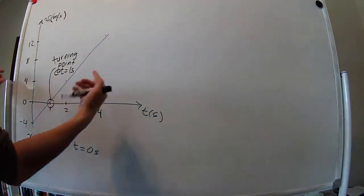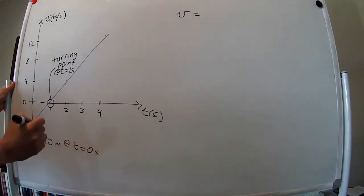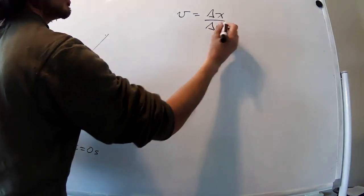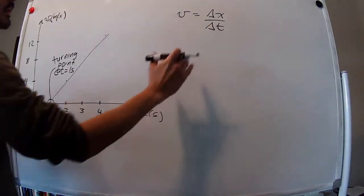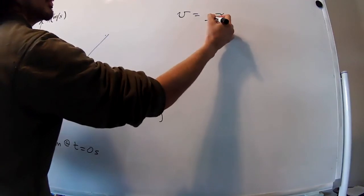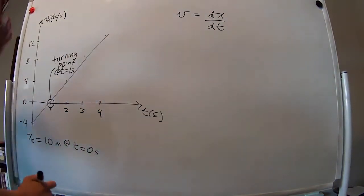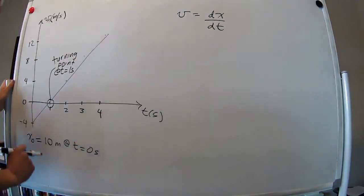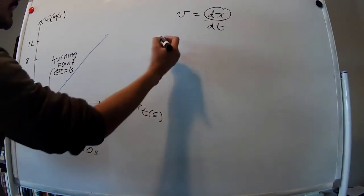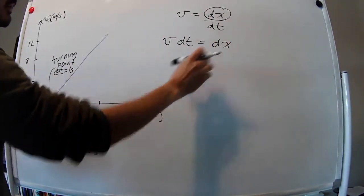Velocity equals change in position divided by change in time. If the change in time is very tiny, we call it dt, and position change becomes dx. So v equals dx/dt — the instantaneous rate of change of position with respect to time. That is the definition of velocity. Rearranging, v dt equals dx.